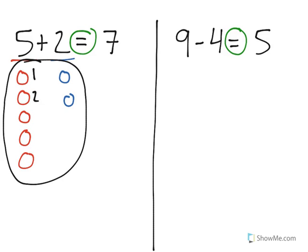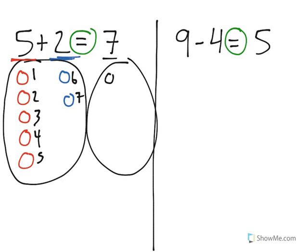And when I count, I can see that I have a total of 7. So what the equal sign means is that these two groups that we added, 5 plus 2, is the same thing as having one group of 7 circles.